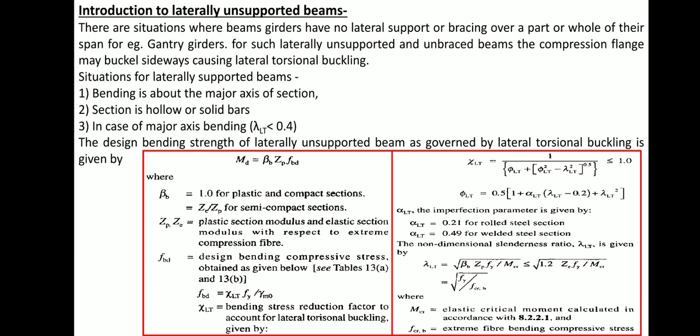In laterally supported beams, the beams are not subjected to any torsional buckling, so there is no reduction in strength. The full yield strength fy = 250 MPa is used, and for plastic and compact sections the design bending strength Md is calculated as beta_b times plastic section modulus times fy divided by partial safety factor gamma_m0. However, for laterally unsupported beams, this yield strength fy is reduced, and this reduced value is now termed fbd.